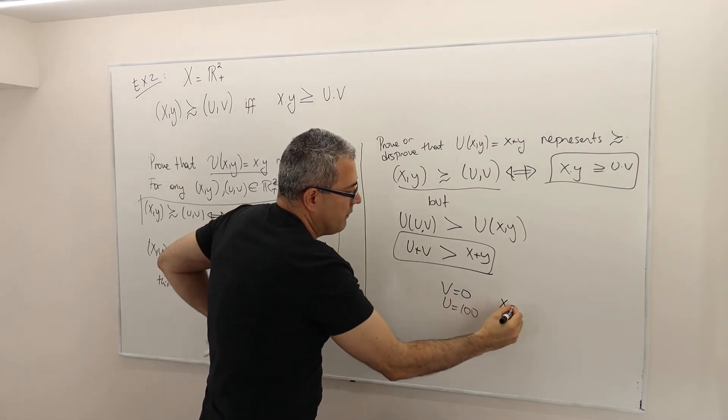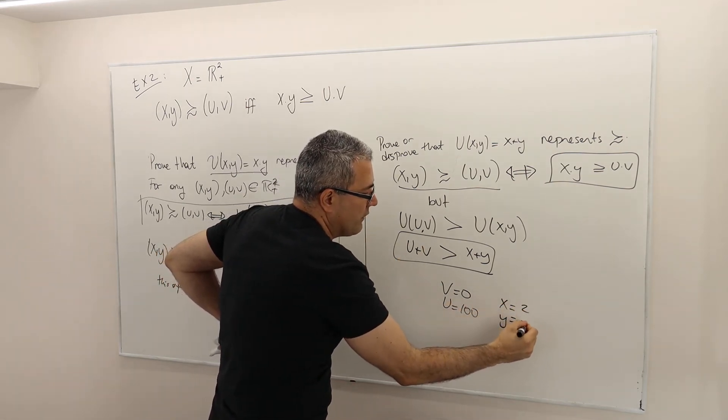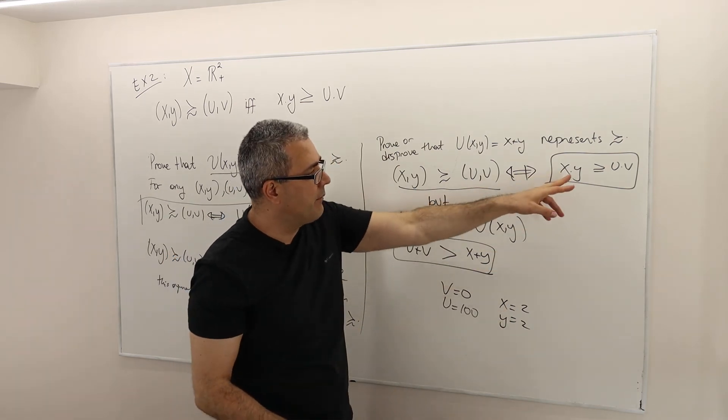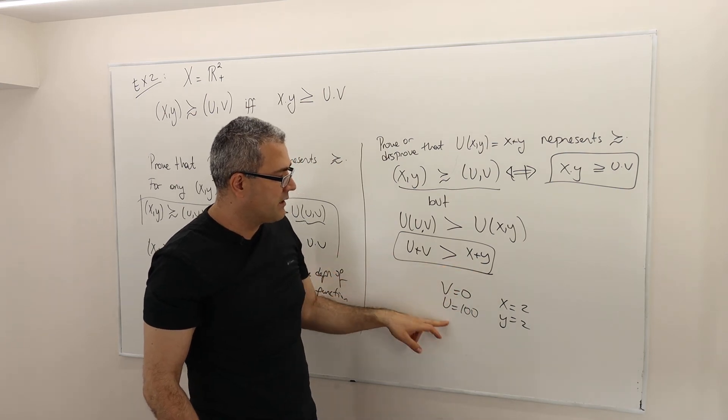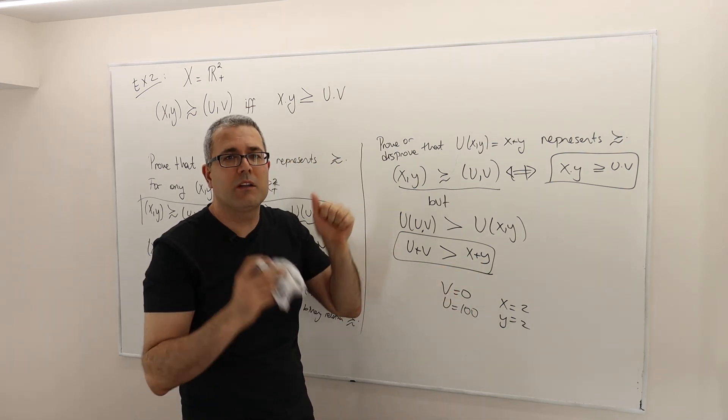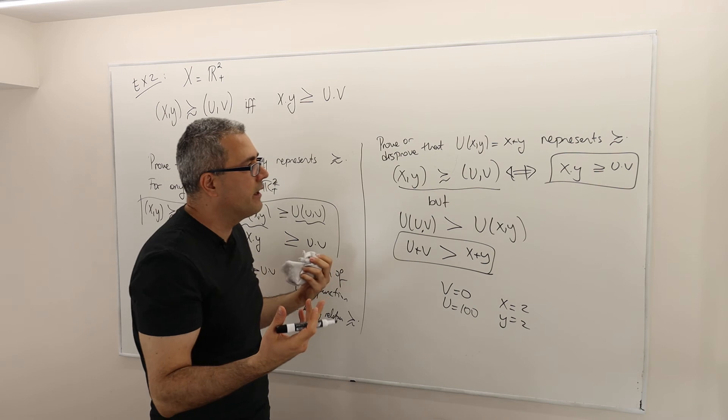And X, Y, well, I don't know, 2 and 2. When I multiply them, it's 4, greater than 0. When I add them up, it's 4. It's less than 100. So you know what? I got the example. There you go.